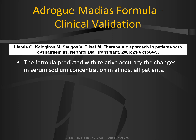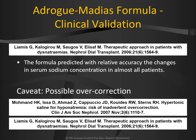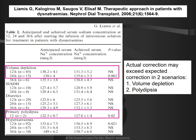Although the Adrogue-Madias formula is calculated based on a mathematical model, it has been clinically validated in a few studies and predicted with relative accuracy the changes in serum sodium in most patients, with some caveats of possible overcorrection in certain subsets of patients. In two clinical scenarios — volume depletion and primary polydipsia — none of the known formulas will accurately calculate the change in serum sodium. This may result in overcorrection in a large majority of cases if we are not careful and too dependent on the formula.